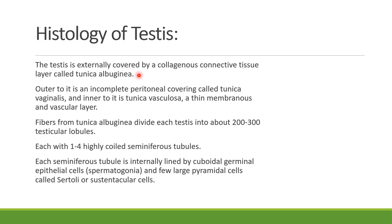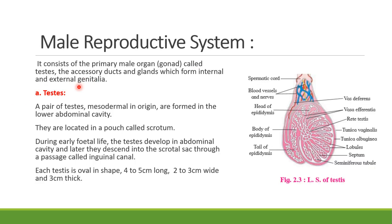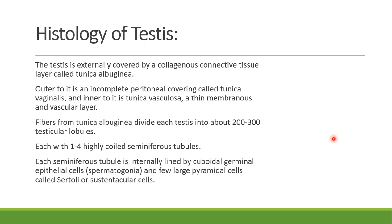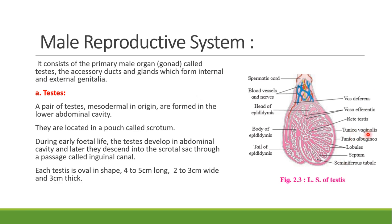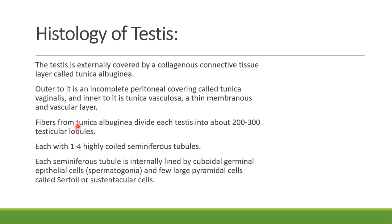Looking at the histology of the testis: the external cover is made up of a collagenous connective tissue layer called the tunica albuginea. Outer to it is an incomplete peritoneal covering called the tunica vaginalis. Fibers from the tunica albuginea divide each testis into about 200 to 300 testicular lobules, each containing one to four highly coiled seminiferous tubules.